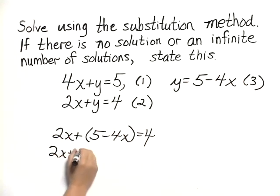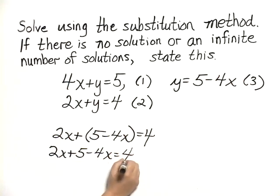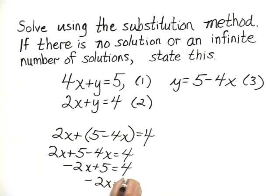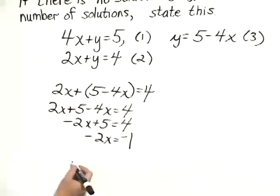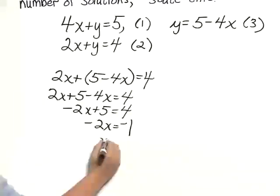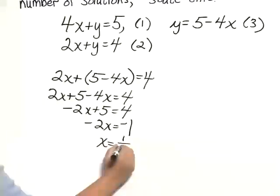2x plus 5 minus 4x equals 4. That gives me negative 2x plus 5. Negative 2x equals negative 1. That's subtracting 5 from both sides, and dividing both sides by negative 2, I have x equals 1 half.